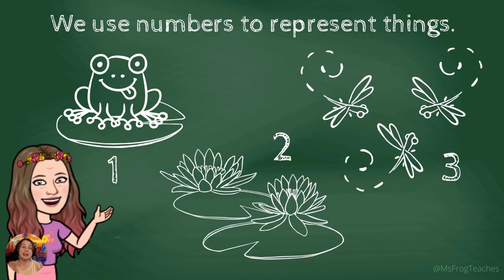So in the same way, we use numbers to represent how many things. Like in this picture, we have one frog, two lily pads, three bugs.